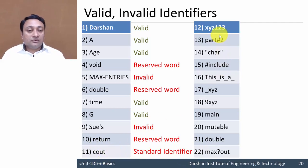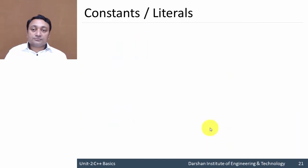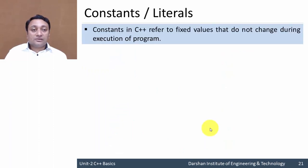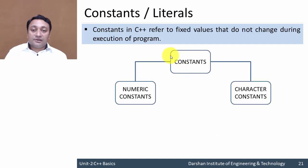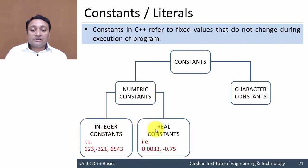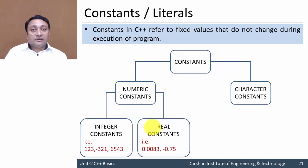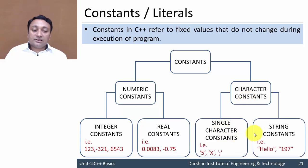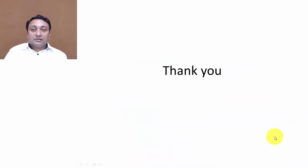You can practice with the remaining identifiers. Now let us discuss constants and literals. Constants are values that remain fixed during execution of a program. They are classified into numeric constants and character constants. Numeric constants are further classified into integer constants and real constants. For example, if you declare a variable 'age' and assign value 50, that 50 is an integer constant. Character constants are classified into single character constants and string constants.